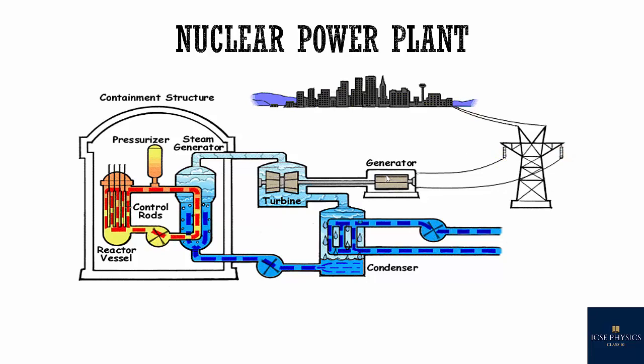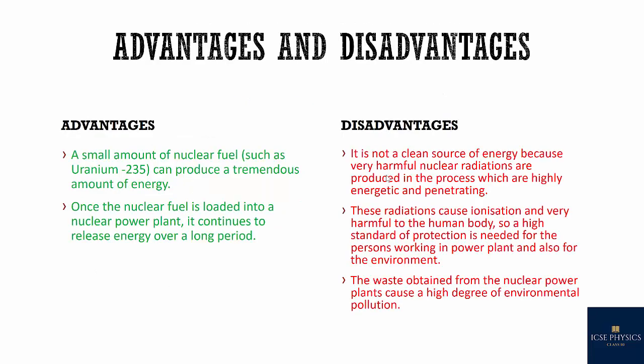The advantages of nuclear power plants are that a small amount of nuclear fuel such as uranium-235 can produce a tremendous amount of energy, and once the nuclear fuel is loaded into a nuclear power plant, it continues to release energy over a long period. The disadvantages are that it is not a clean source of energy because very harmful nuclear radiations are produced in the process, which are energetic and penetrating. These radiations cause ionization and are very harmful to the human body, so a high standard of protection is needed for persons working in the power plant and for the environment.